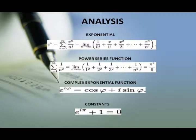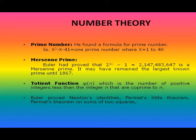Euler created the theory of hypergeometric series, q-series, hyperbolic trigonometric functions, and the analytic theory of continued fractions. Regarding prime numbers, he formed the formula x² − x − 41 = prime number; substituting x = 1 to 40 yields prime numbers. In 1772, Euler proved that 2³¹ − 1 = 2,147,483,647 is a Mersenne prime.